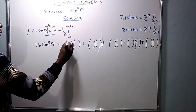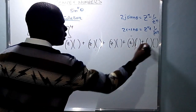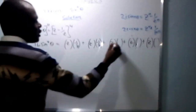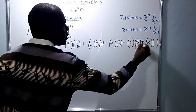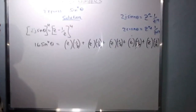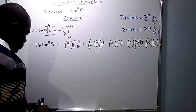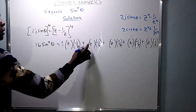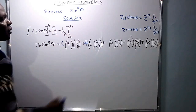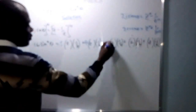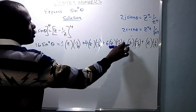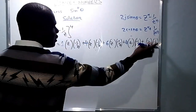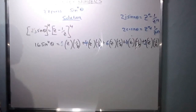The coefficients when n is 4: 4C0 equals 1, 4C1 equals 4, 4C2 equals 6, 4C3 equals 4, and 4C4 equals 1. So the coefficients are 1, 4, 6, 4, 1. We place the coefficients, then put the powers: z powers descend from 4 to 0, and the powers of negative 1 over z ascend from 0 to 4.